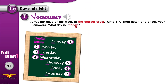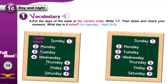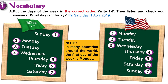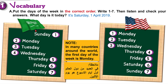What day is it today? Today means this day — the day that we are in, right now. I'm recording this video on Saturday, the 1st of April 2019. In some countries, like the United States and many other countries, the 1st day is not Sunday — it's Monday. In Saudi Arabia and other countries, the 1st day is Sunday.